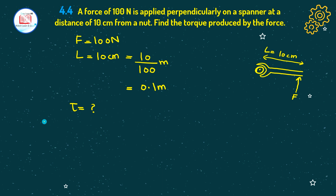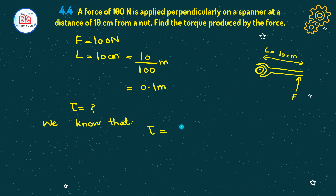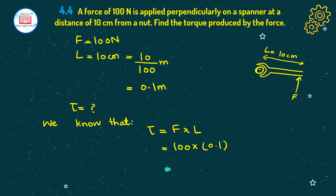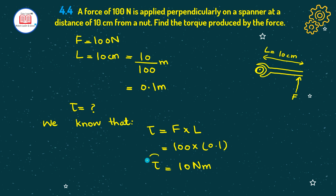We know that torque is equal to F cross L. Force value is 100 and L value is 0.1, so simply multiply them. This gives us 10 newton meter. The unit of torque is newton meter. I hope that is clear.